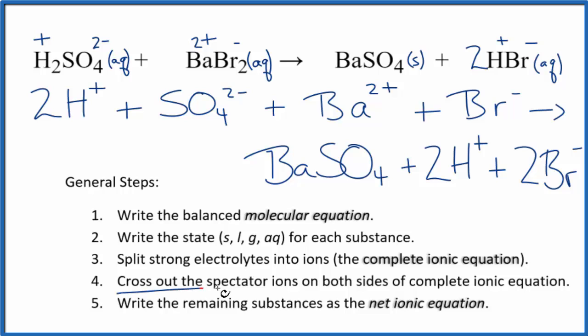At this point, we can cross out the spectator ions. They're on both sides of the complete ionic equation. I can see in the reactants I have two hydrogen ions, and in the products I have two hydrogen ions. Those are spectator ions. We can cross those out.